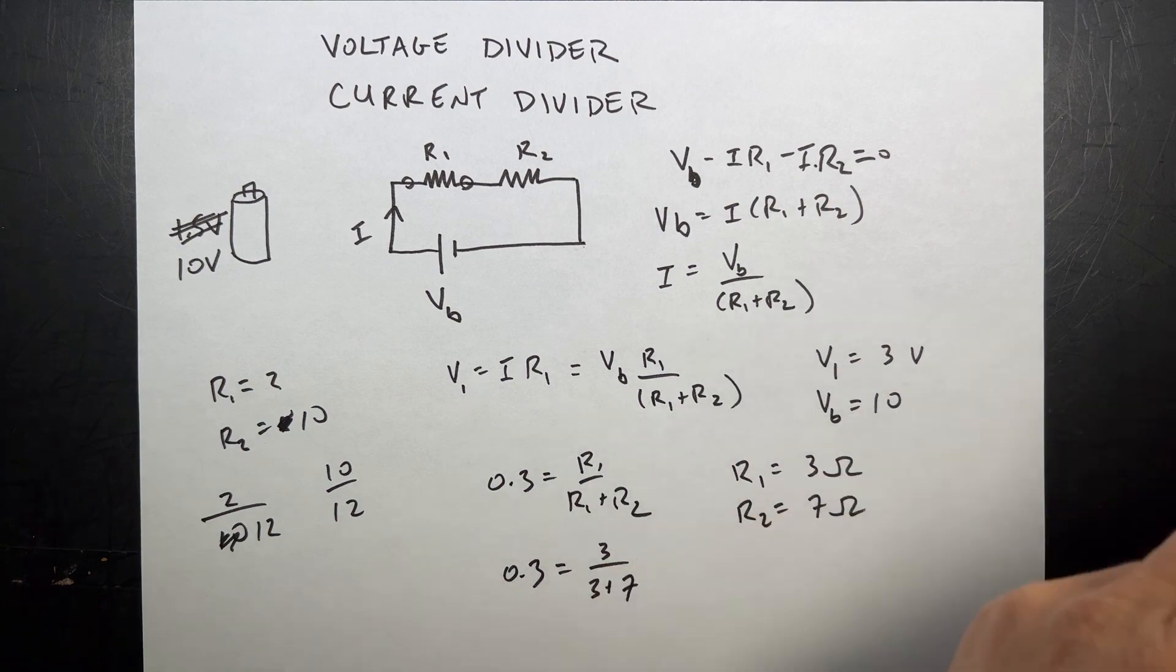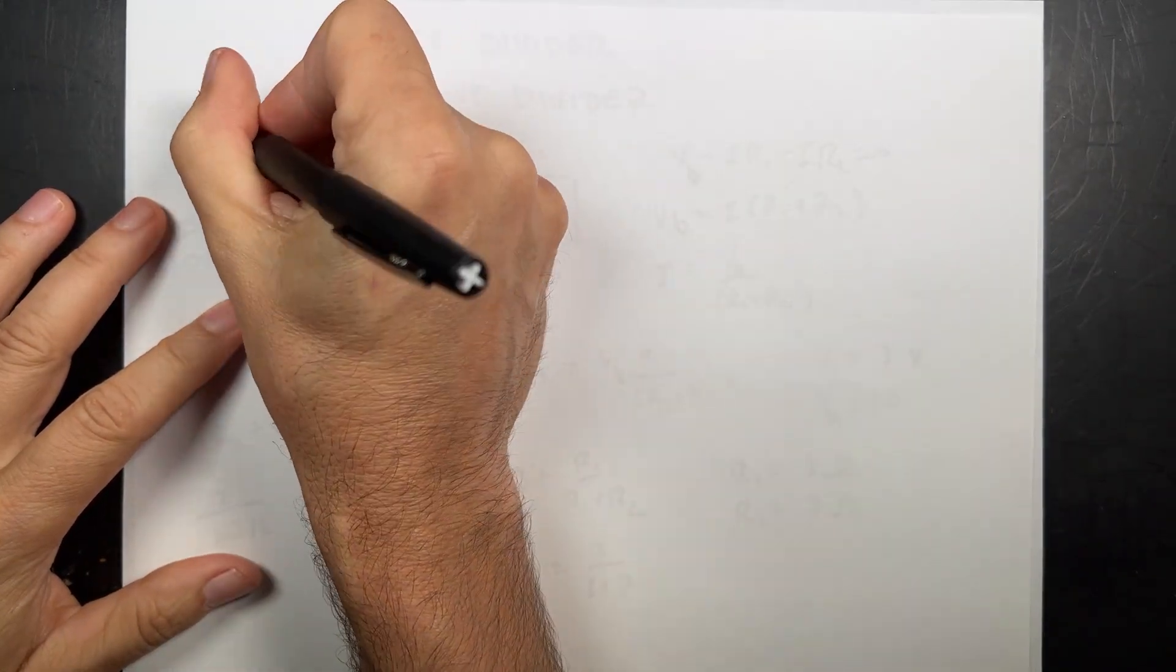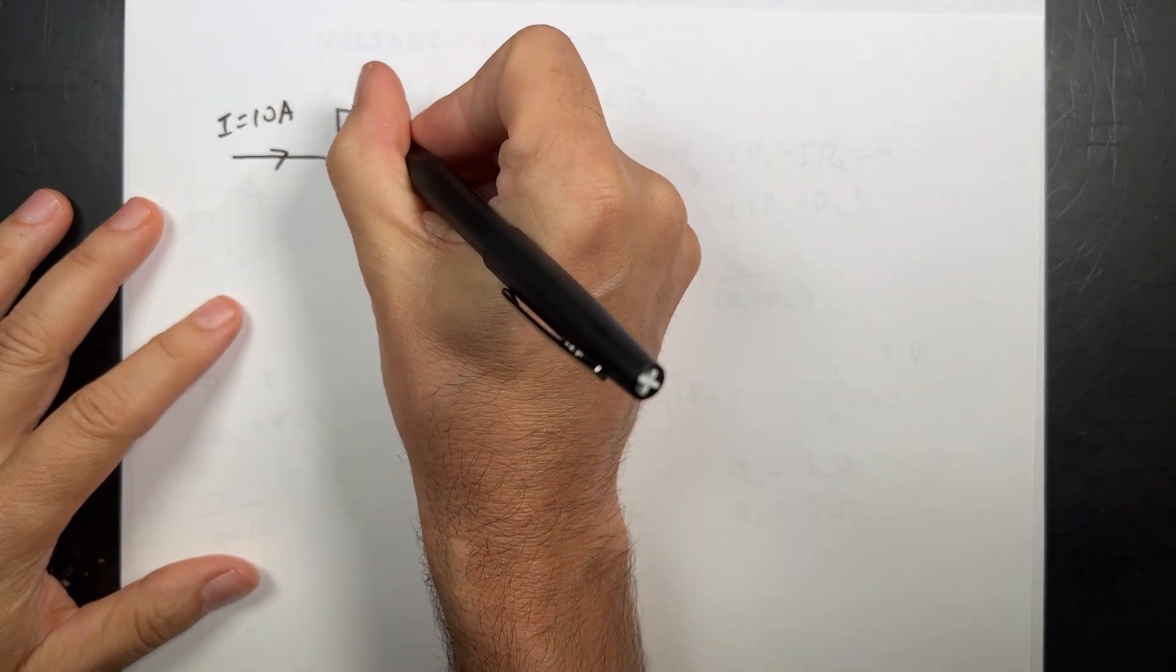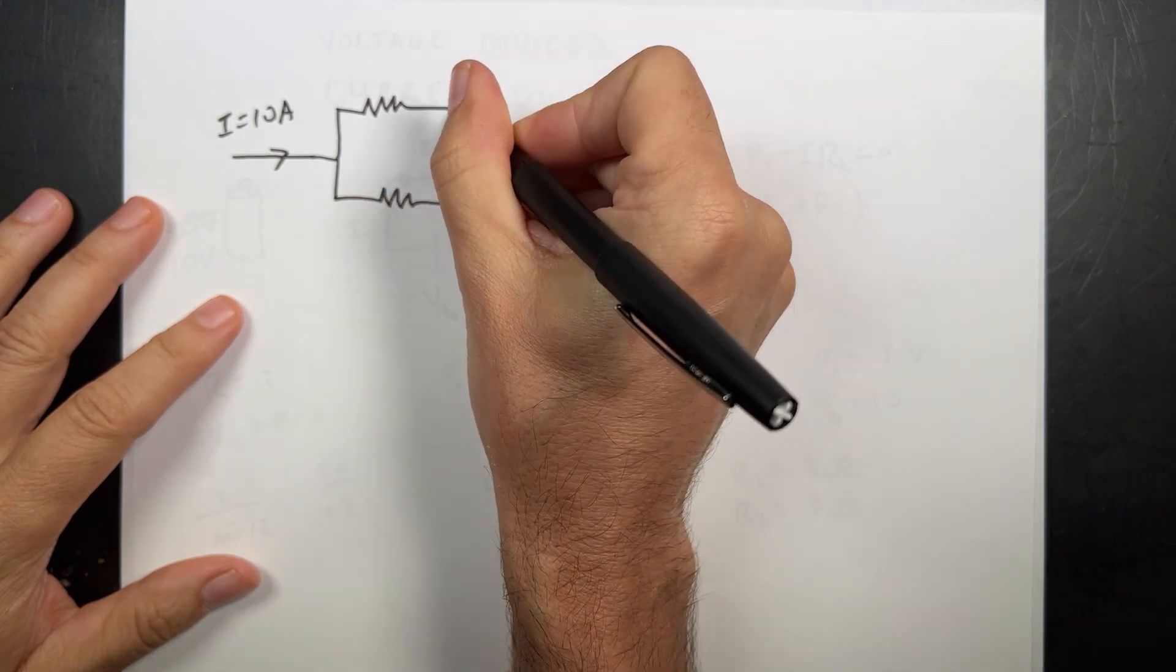Now for the current divider. This one's a little bit more complicated because we don't really care about the battery, we care about the current. So imagine that I have some current I coming in. Let's say I equals 10 amps. Yes that's large. And I want to split it so that some of the current goes through there and some goes through here.